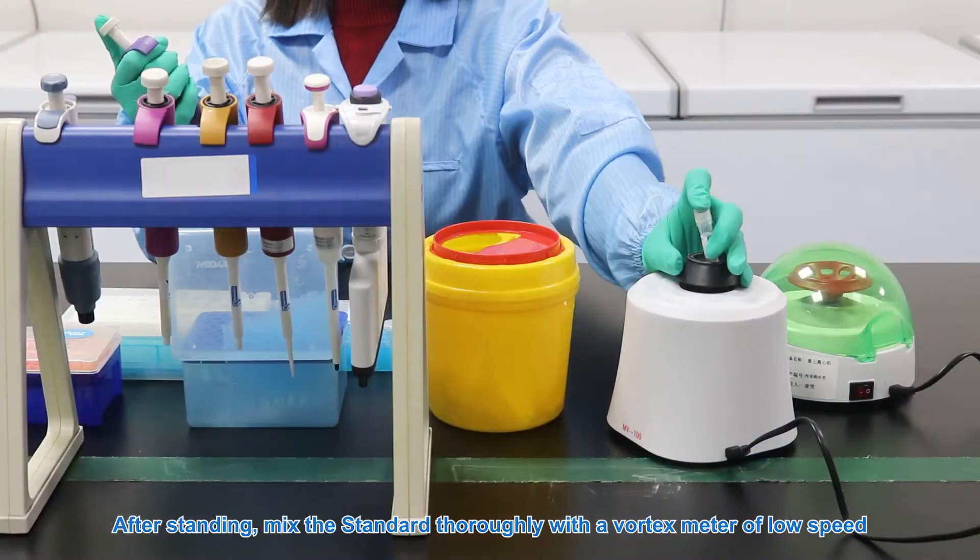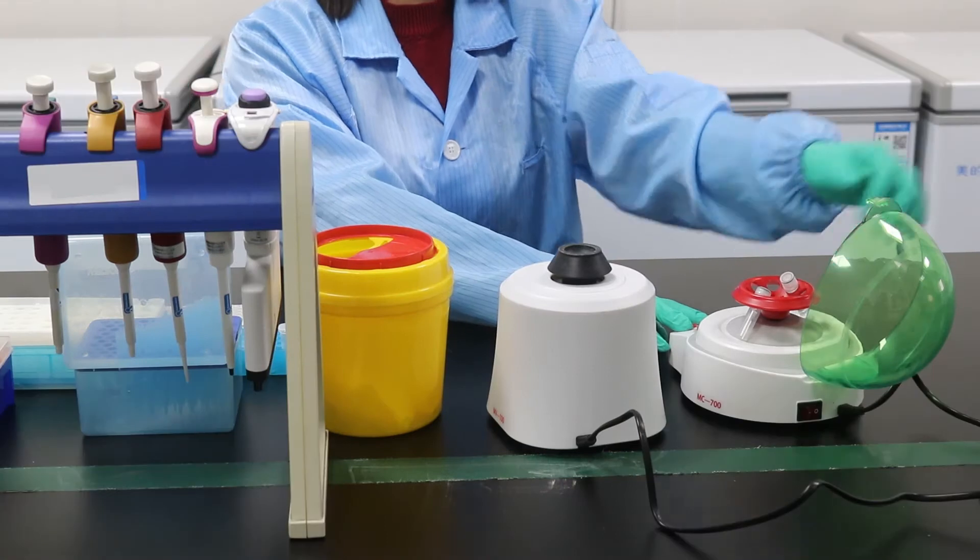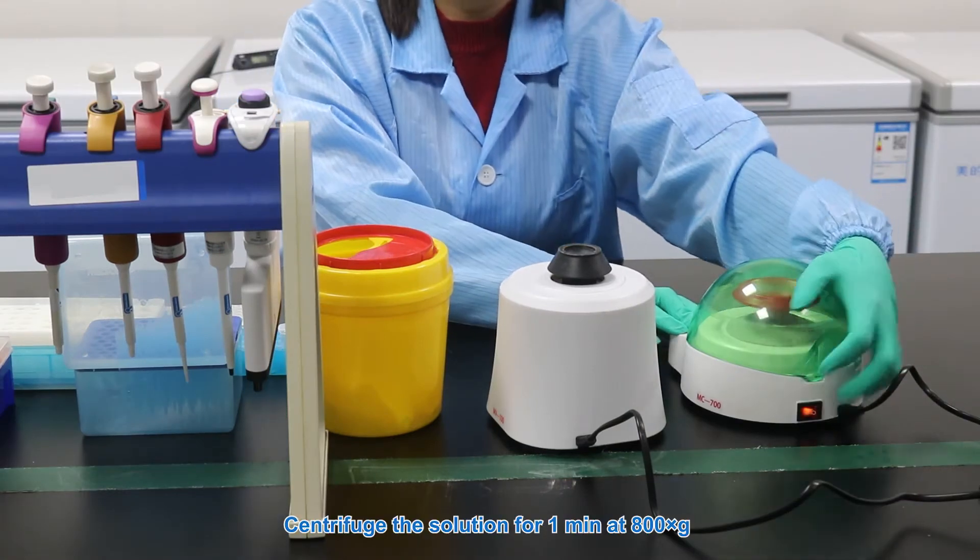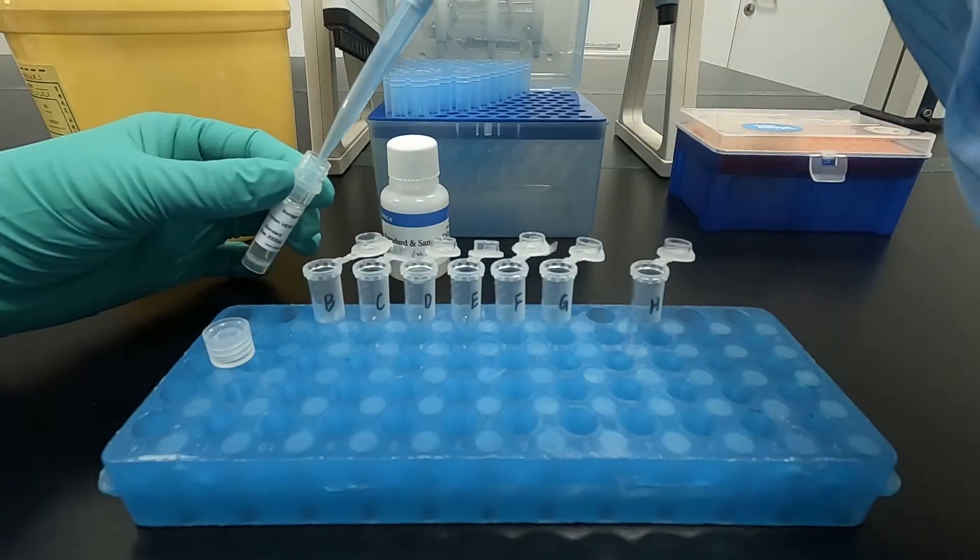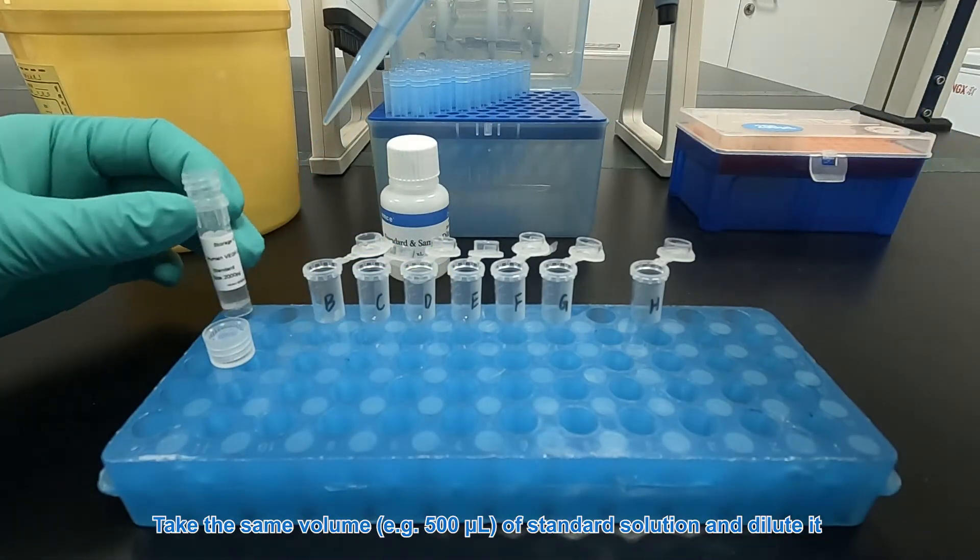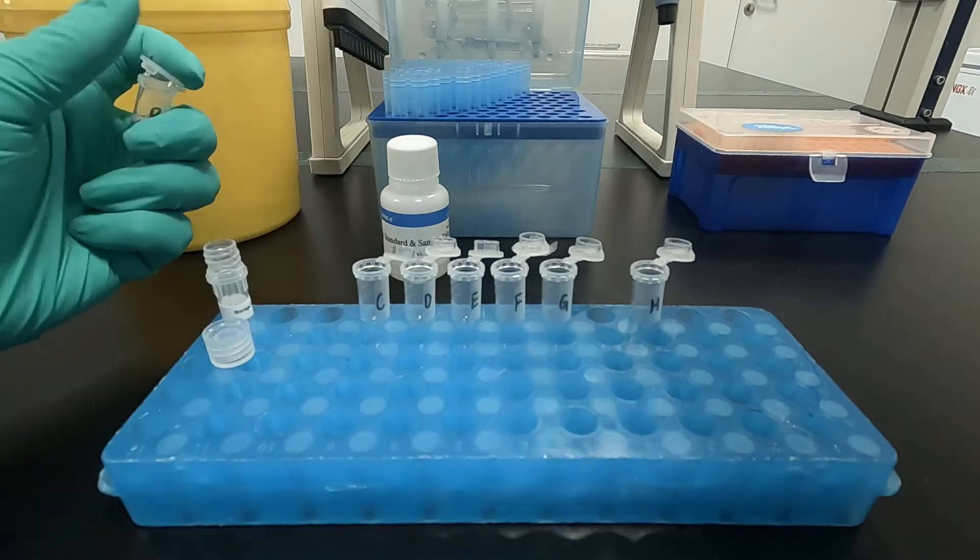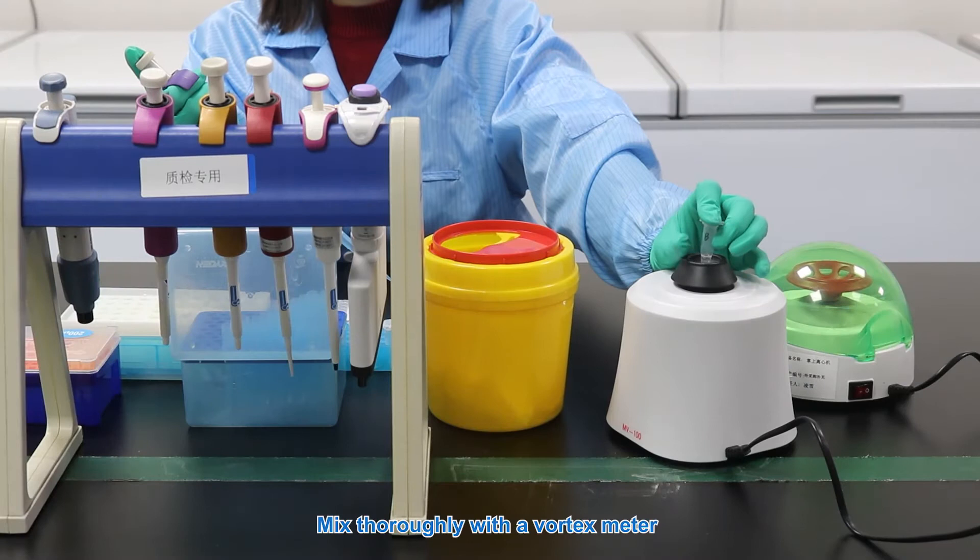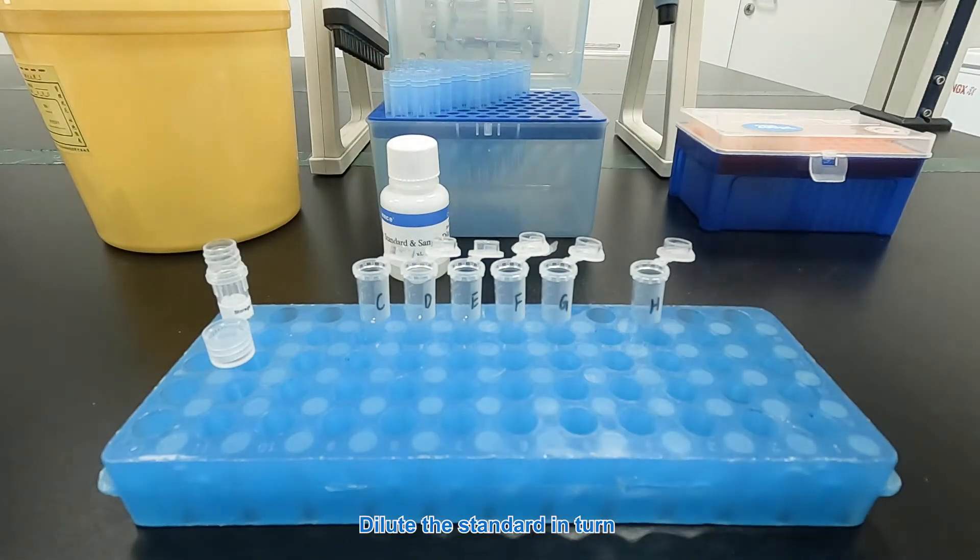After standing, mix the standard thoroughly with a vortex meter at low speed. Centrifuge the solution for 1 minute at 800 G. Take the same volume of the standard solution and dilute it. Mix thoroughly with a vortex meter. Dilute the standard in turn.